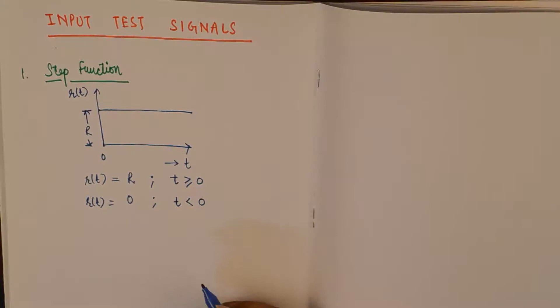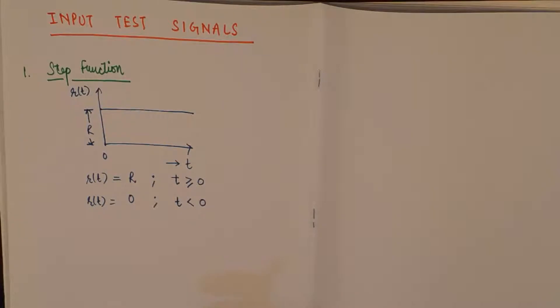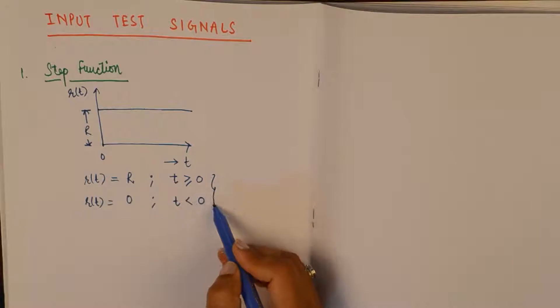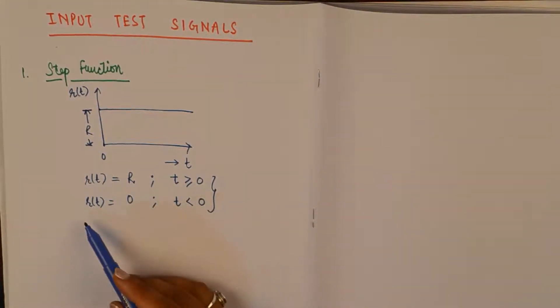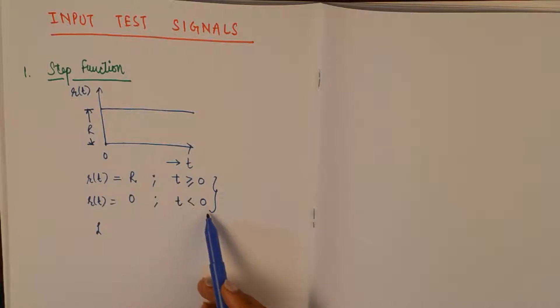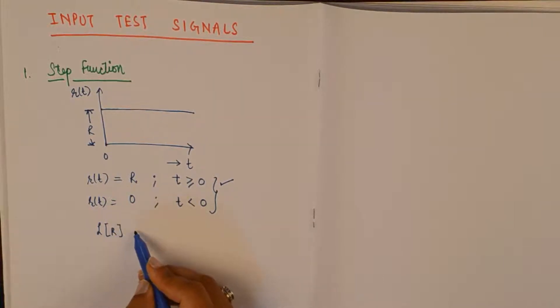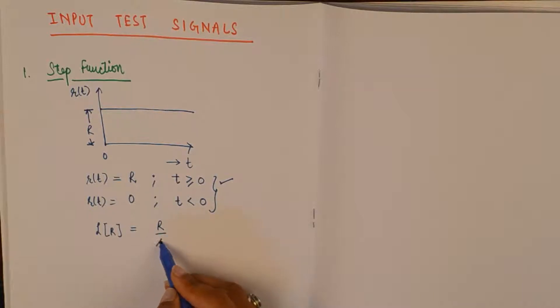This is how we define the step input function in the time domain. Since analysis is done in the S domain, Laplace transform plays a vital role in linear control systems. Taking the Laplace transform — since the value is non-existent for t less than 0 — the Laplace transform of constant R is R divided by s, giving the Laplace expression for the step function.